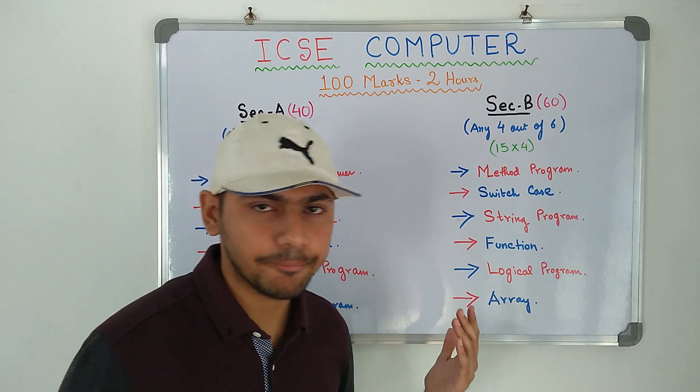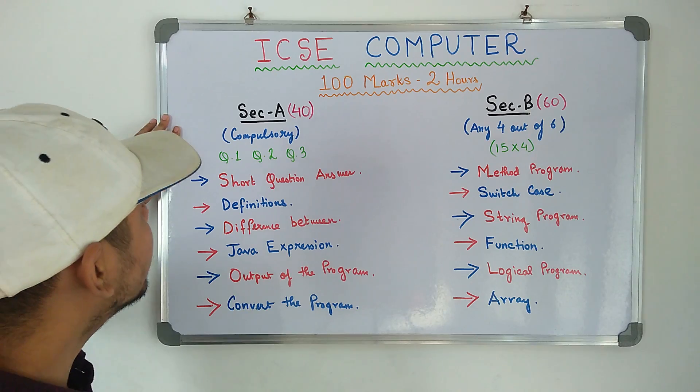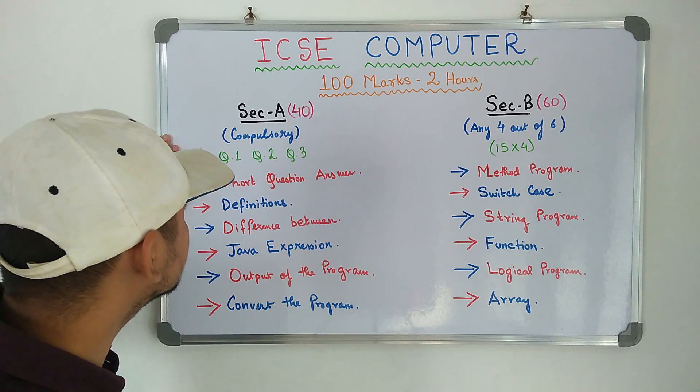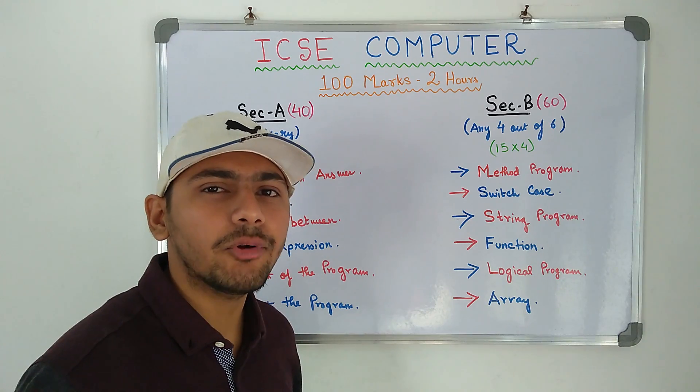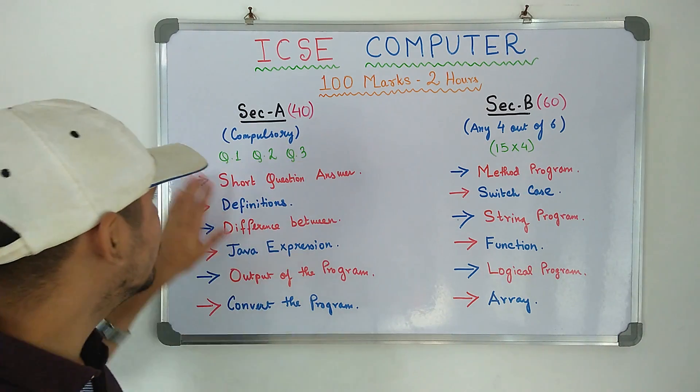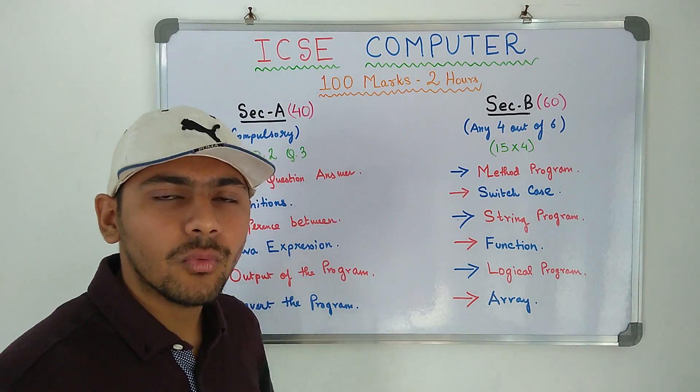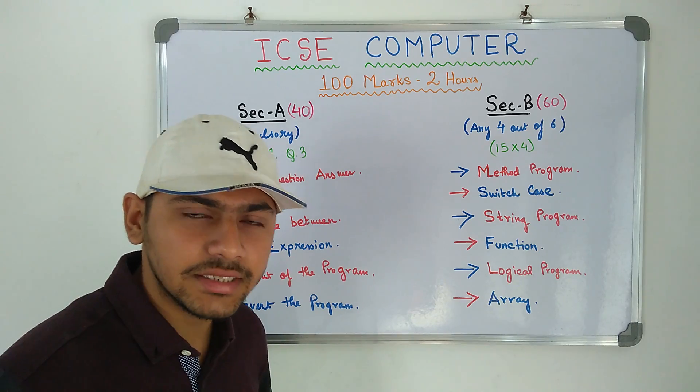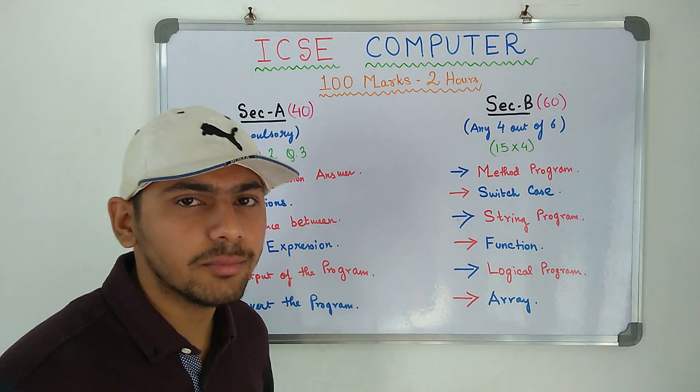We begin with Section A. Section A 40 marks, this is a compulsory section. That means you have to attempt all the questions over here. You will get 3 questions. Question 1 and Question 2 will be of 10 marks each and Question 3 will be of 20 marks.